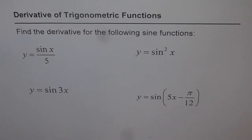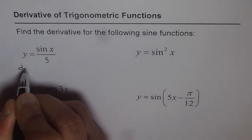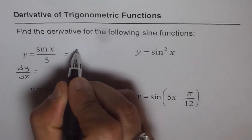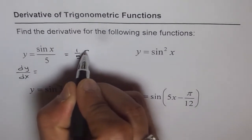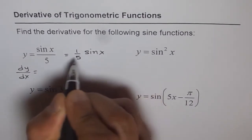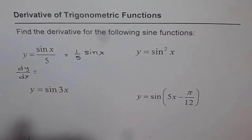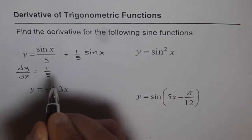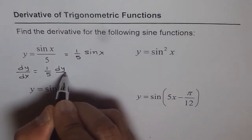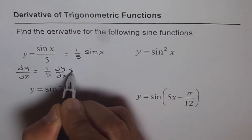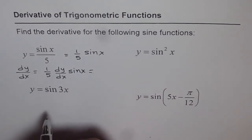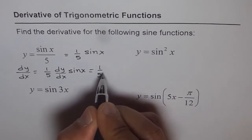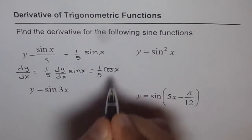Let's find the derivative. So dy/dx equals — if you see, it is 1 over 5 times sine x. That is what the function is. 1 over 5 is a constant, so 1 over 5 will come outside the derivative, and we take the derivative of sine x with respect to x. Derivative of sine x is cosine x, so we get 1 over 5 cos x. That's the answer.